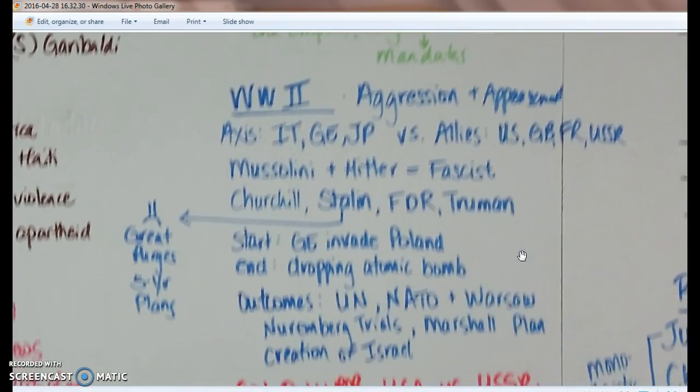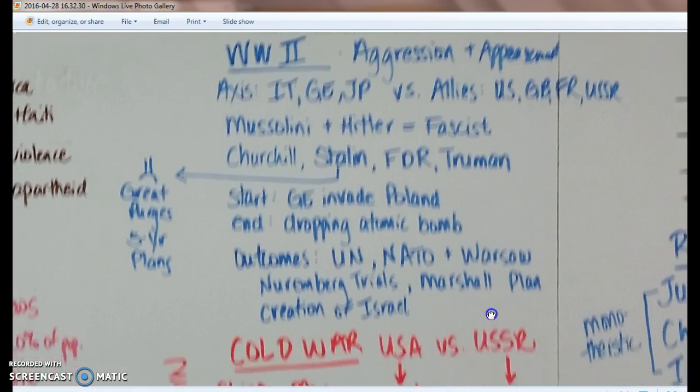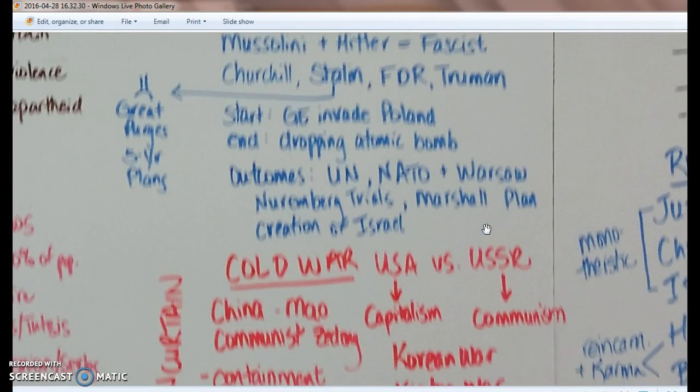World War I is a cause of World War II. We have aggression of the Axis powers and appeasement of the Allied powers. Germany invades Poland, which officially starts the war. Japan invades China, Manchuria, and Korea. Mussolini and Hitler are fascists, leading Italy and Germany respectively. Tojo is in Japan, Churchill in charge of Britain. Stalin — the Great Purges and Five-Year Plans. FDR is the first U.S. president during World War II; Truman is the last and drops the atomic bombs. D-Day is the other big battle — storming the beaches of Normandy, led by Eisenhower. Outcomes: the United Nations is formed replacing the League of Nations, the UN Declaration of Human Rights by Eleanor Roosevelt, NATO and Warsaw Pact formed, the Nuremberg Trials to punish the Nazis, the Marshall Plan to rebuild Europe, and the creation of Israel as a homeland for the Jews.